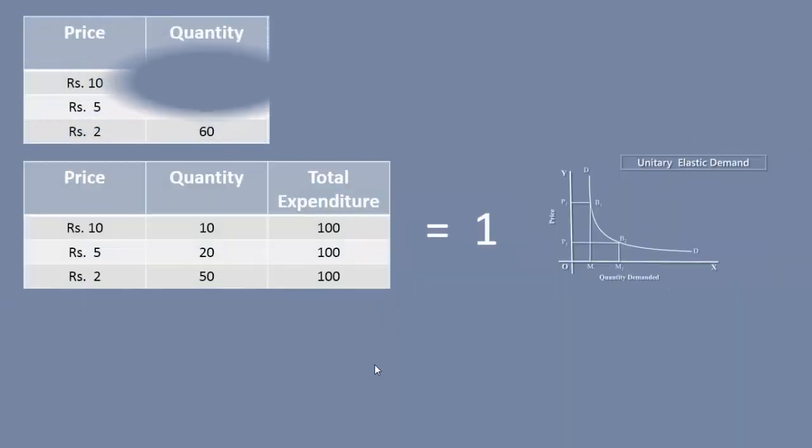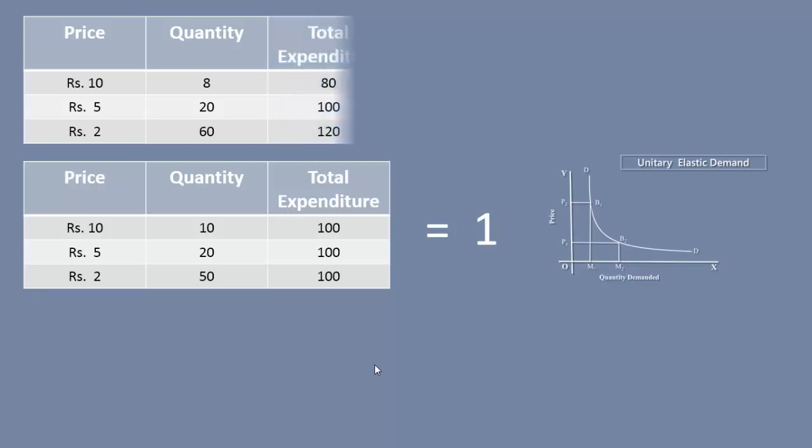Look at this table. This is a demand schedule. It also satisfies the law of demand. But what kind of elasticity does it represent? For this, again we have to calculate the total expenditure. Analyze the total expenditure behavior.